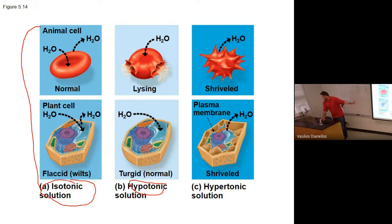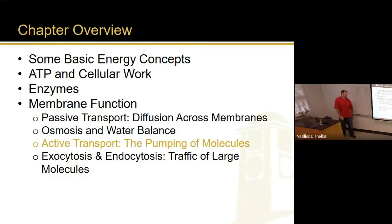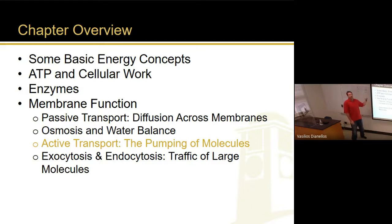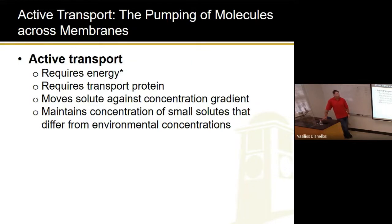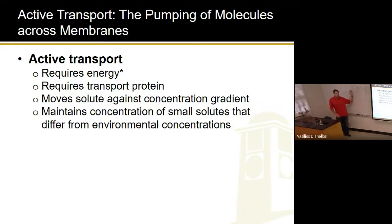All right, now let's talk about active transport. We're done with osmosis. I don't like how the book does this order — in my opinion we should have talked about active transport right after passive transport. But now we're going back to something that's kind of the opposite of diffusion. Active transport requires energy, unlike passive transport. Passive transport is simply diffusion — high concentration to low concentration; you don't have to put in energy for that. Active transport does require energy.